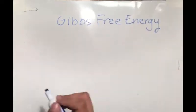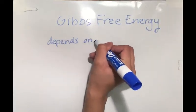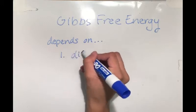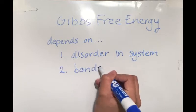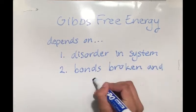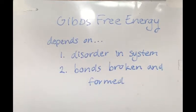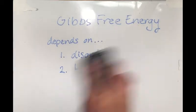In biochemistry, the description of energy that is most often used is called Gibbs free energy, which refers to energy that is available to do work. Gibbs free energy depends on the amount of disorder in the system and the number of bonds broken and formed, also known as the enthalpy of bond formation.